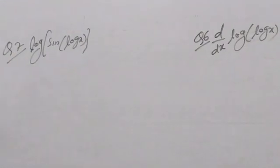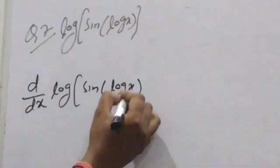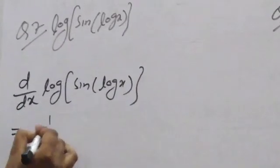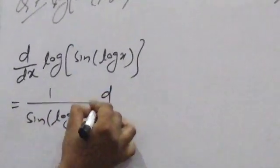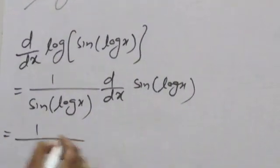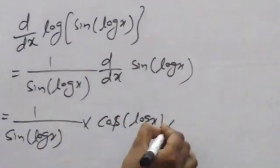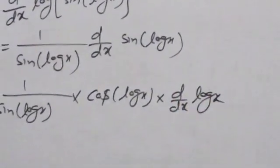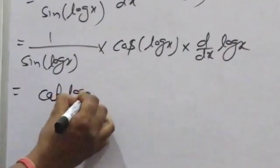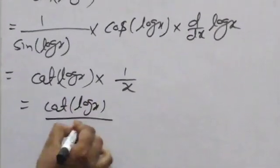Question 5: d/dx of log(sin(log x)). Log is the outer function, sin(log x) is the inner function. Differentiating log gives 1 upon sin(log x), then d/dx of sin(log x). Differentiating sine gives cos(log x), then d/dx of log x gives 1/x. So the result is cos(log x) / sin(log x) times 1/x, which equals cot(log x) / x.